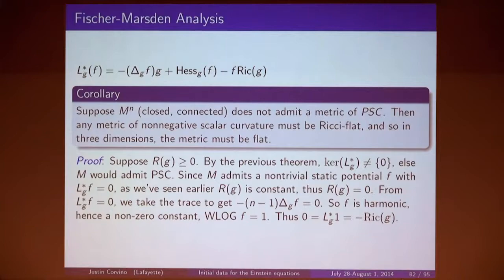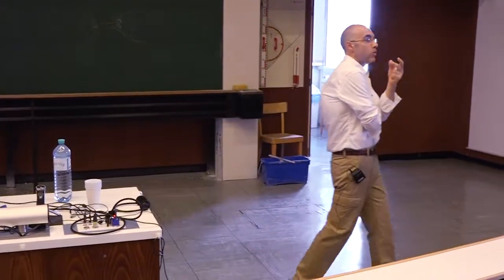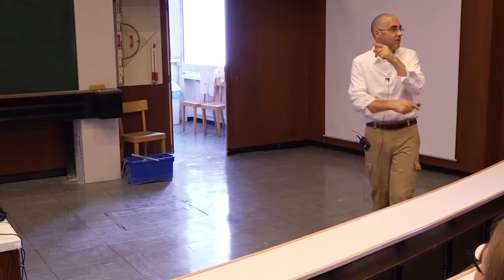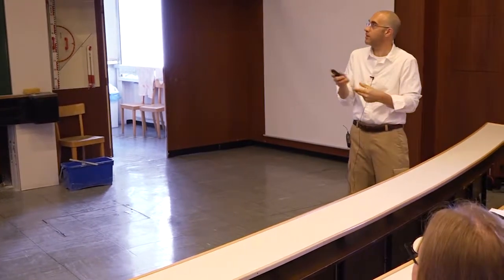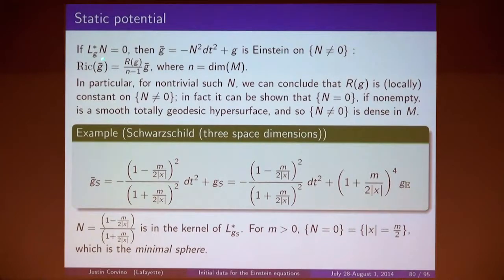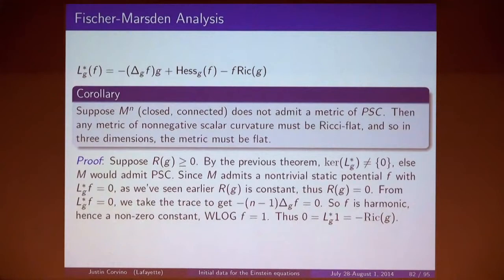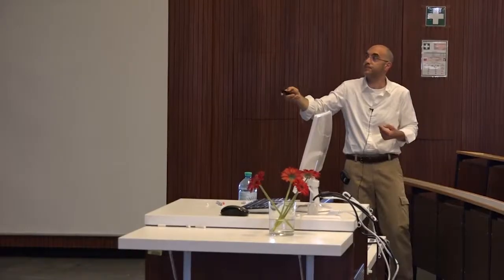Question: why is the scalar curvature constant when there's kernel of L-star? One proof: use the solution of the equation to make a space-time metric g-bar. That space-time metric is Einstein. In dimensions three and higher, an Einstein metric must have constant scalar curvature. That's one way to prove it.